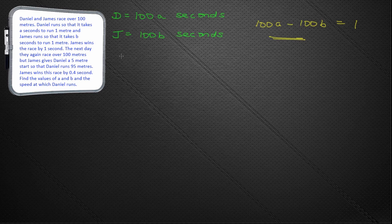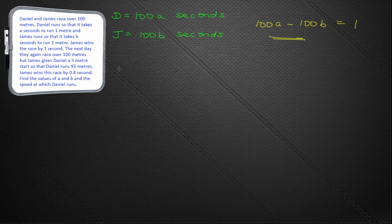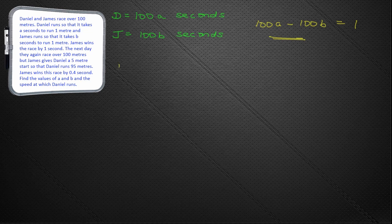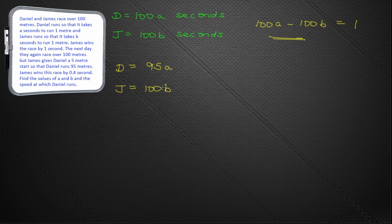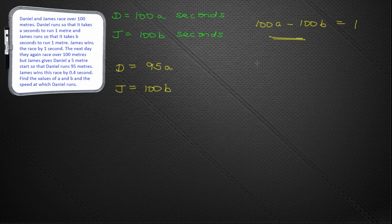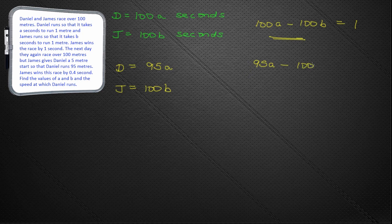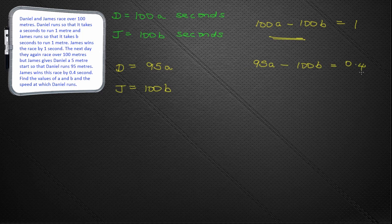I think we have to assume they run at the same speed. So, Daniel has a 5 metre start. So, Daniel only runs 95 metres. So, in this one, Daniel runs 95 metres at speed A. But, James runs the full 100 metres at speed B. And, James wins again. So, Daniel has the slower time. So, we have 95A minus 100B is equal to... Well, in this case, he wins by 0.4 seconds.